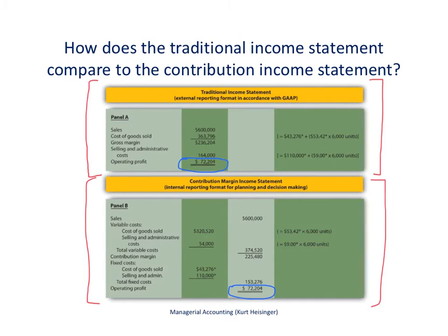In the traditional income statement, cost of goods sold is shown as $363,796, but it's not broken out by variable and fixed portions. In the contribution margin income statement below, cost of goods sold is split: $320,520 that are variable costs and $43,276 that are fixed costs — which sum to the $363,796 shown above. Similarly, selling and administrative costs are broken out into variable and fixed components, which together sum to the $164,000 shown in the traditional income statement.